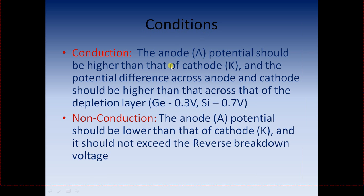Conditions for conduction: the diode will conduct when the anode is positively charged and the cathode is negatively charged, and the voltage should be greater than the depletion region voltage, so there is enough energy for carriers to cross the depletion region. The conduction condition is: anode positively charged, cathode negatively charged, and the potential difference between anode and cathode should be higher than that of the depletion layer. For germanium, the depletion layer voltage is 0.3 volts, and for silicon it is 0.7 volts.